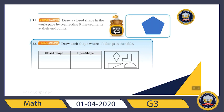Question 22: draw a closed shape in the workspace by connecting five line segments at their endpoints. I drew a pentagon — you can draw anything that has five line segments: one, two, three, four, and five. Now let's draw each shape where it belongs in the table — these four shapes.